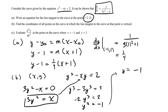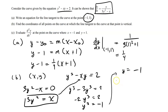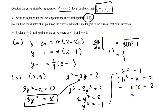Now how do we find the x-coordinate? We plug y equals negative 1 back into the original equation. Think of it like a system of equations. So: negative 1 cubed minus x times negative 1 equals 2, giving us negative 1 plus x equals 2, so x equals 3. We found that the coordinate with a vertical tangent is (3, negative 1).